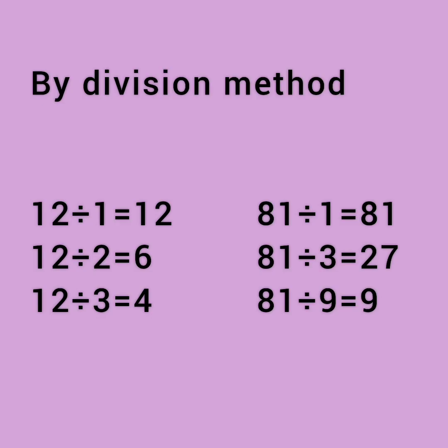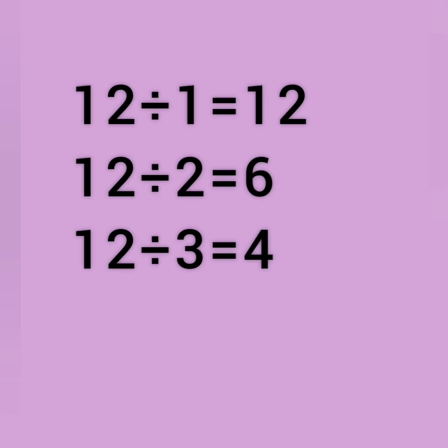This is the another method of finding factors: division method. Let us see the first example. 12 divided by 1 equals 12, 12 divided by 2 equals 6, 12 divided by 3 equals 4.